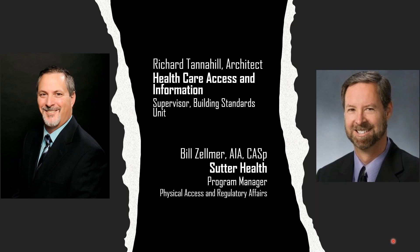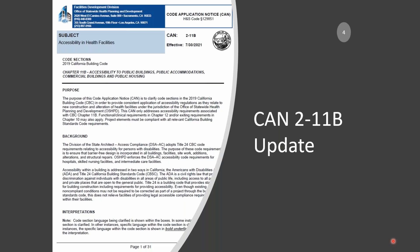There is already a question about AIA credits. If you're attending this webinar, you will receive a certificate of attendance and you do need to self-report that to the AIA. We're going to be looking at CAN 2-11B going through it from beginning to end, looking at examples and discussing it, hopefully providing better clarity when you're actually using the CAN. It is available for download as one of the handouts and also from the HCAI website.